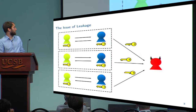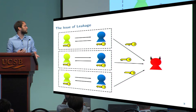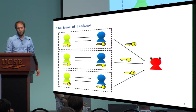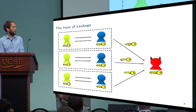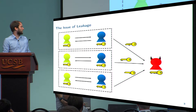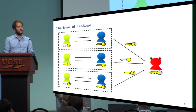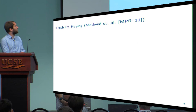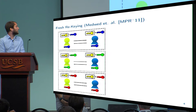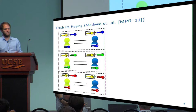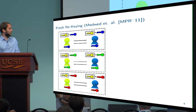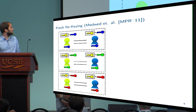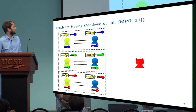The adversary can do this during many sessions, so even if he just learns a small amount in each session, in total he can recover the secret key. One approach to provide security in such a setting is called fresh rekeying. The idea is basically that we just use the secret key to generate some session keys, and then we use the session keys to perform the protocol.